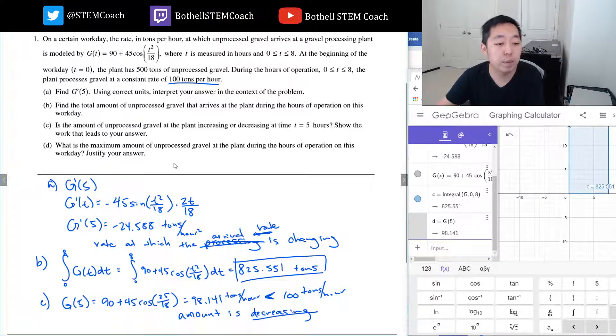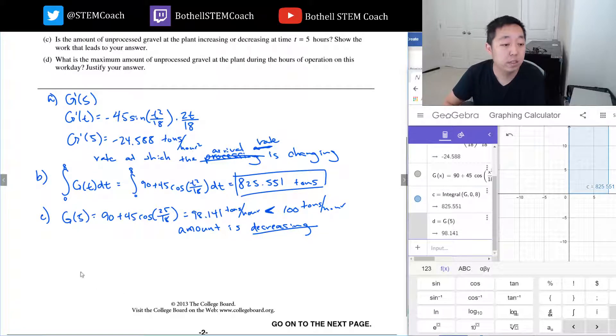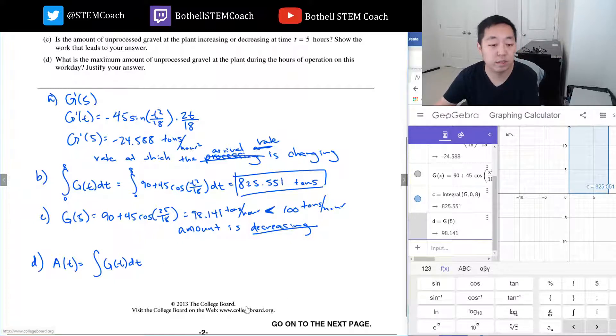And then part D: What is the maximum amount of unprocessed gravel during the hours of operation? So the amount of gravel, like we kind of did before, is the integral of g(t) dt. I'm going to change the variable because I'm using t here, so it can be kind of confusing, which is why they always do a variable change here sometimes. It doesn't matter, you can use any letter if you want, dx.